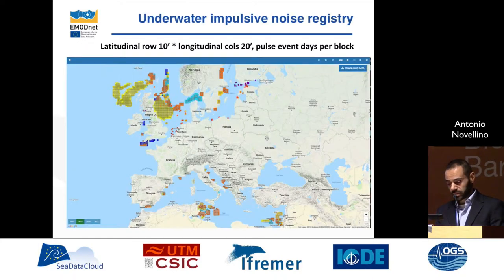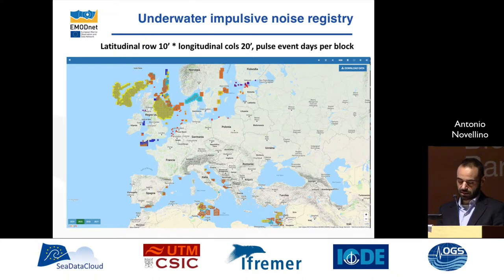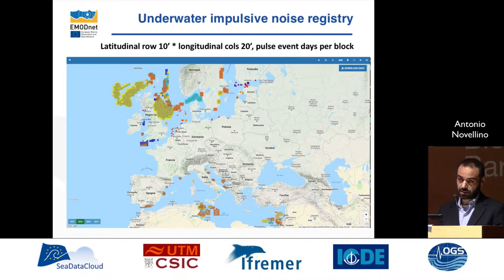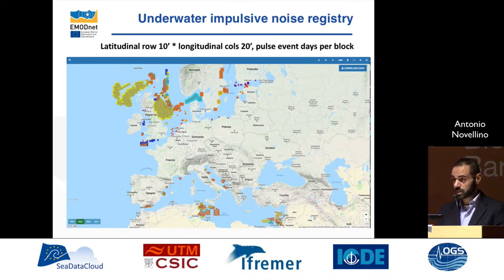This is an example of a different product: a registry of underwater impulsive noise. The main activity here was to harmonize the different registers that had already been created. In the north, especially in the HELCOM and OSPAR region, they were quite advanced in this process, and ISIS was hosting their database. We started from that, extended the ISIS grid down to the Mediterranean area, and then linked data being collected by ACCOBAMS. We are now offering the first version of the European Impulsive Noise Registry, which is quite important for regional sea conventions and for the descriptor 11.1 assessment under the MSFD.